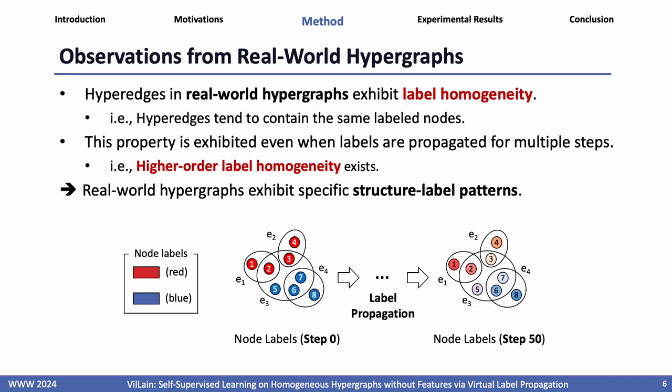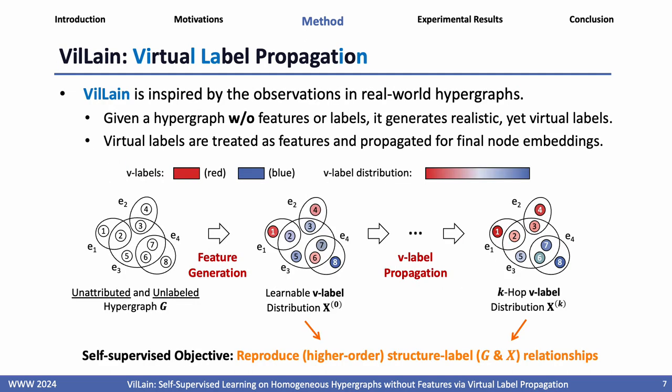In this paper, we propose VILLEN for learning versatile node embeddings for hypergraphs. Specifically, we observe that hyperedges in real-world hypergraphs exhibit label homogeneity, meaning that hyperedges tend to contain the same labeled nodes. Also, this property is exhibited even when labels are propagated for multiple steps. Given an unattributed and unlabeled hypergraph, VILLEN generates realistic yet virtual labels. These virtual labels, or V-labels, are treated as features and propagated for final node embeddings, with their distributions optimized by an observation-inspired self-supervised objective that aims to reproduce structural-label relationships.